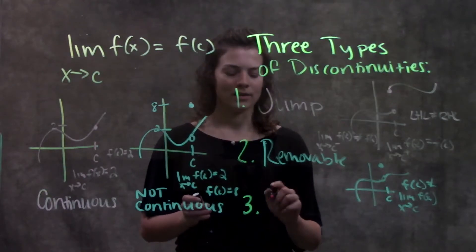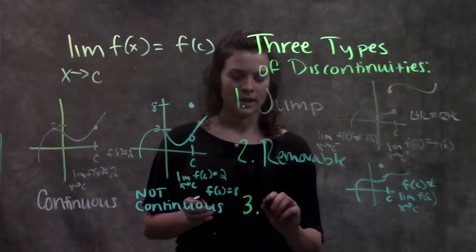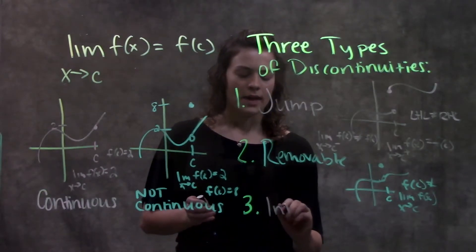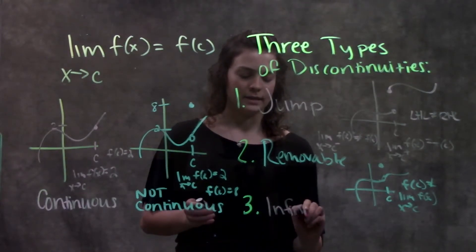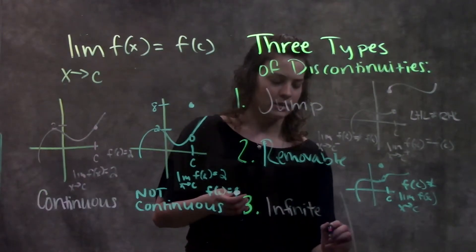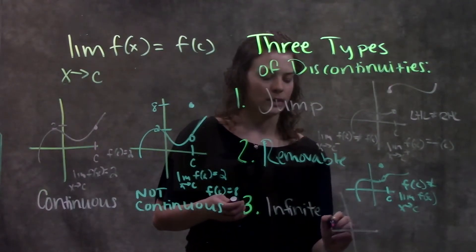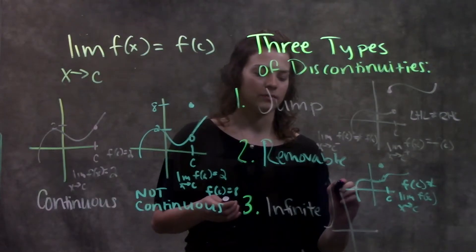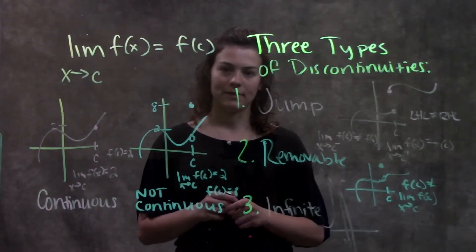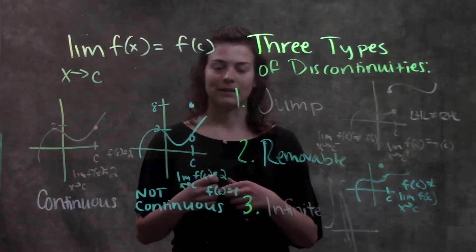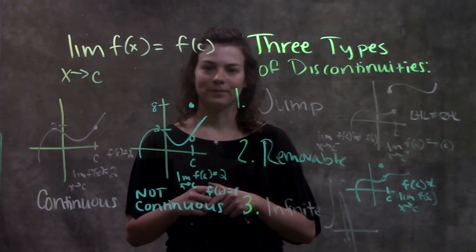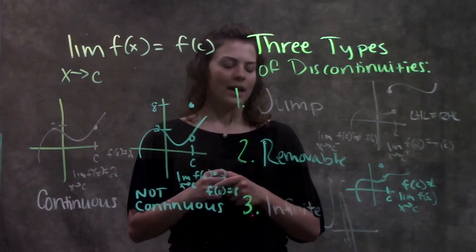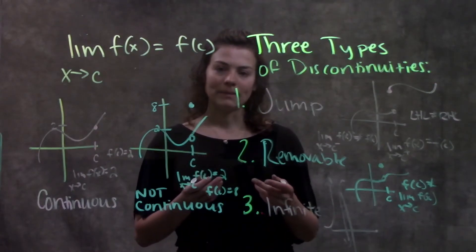The third type of discontinuity is an infinite discontinuity. As you might imagine, that's whenever the function is going either up to positive infinity or down to negative infinity at some x value. So those are your three types of discontinuities.